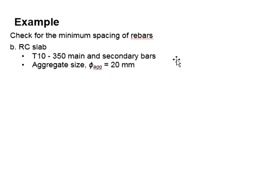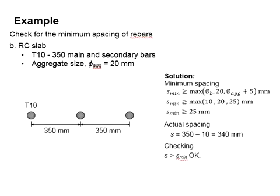This is another example on the minimum spacing. Now we deal with an RC slab. The main and secondary reinforcement bar is R10-350, that means the reinforcement bars are spaced by 350. The aggregate size is 20 mm. You may pause the video for a while for you to work out the solution.